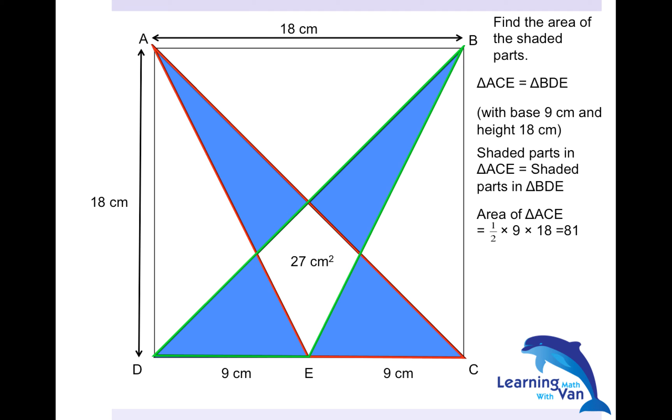And of course, in order to find the shaded parts in one of the triangles, you need to take away 27. So this is the area of the shaded parts. Remember, I have two triangles of exactly the same. So in order to find the four shaded parts, I need to multiply by another two. So you get the same answer, 108.